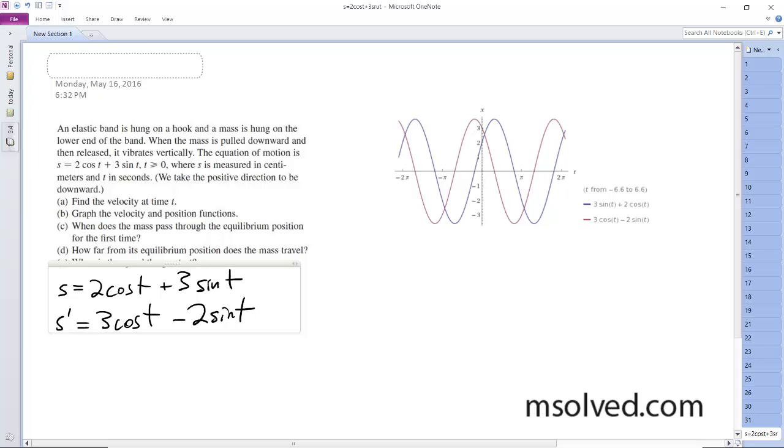Next, I have a graph already made up. So the bluish one is the original equation, just the motion location, and then the speed is the red one.